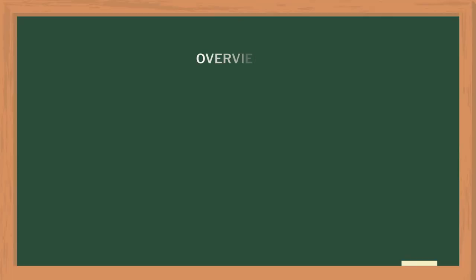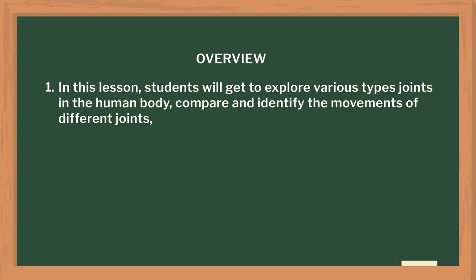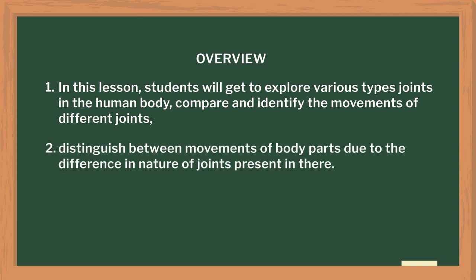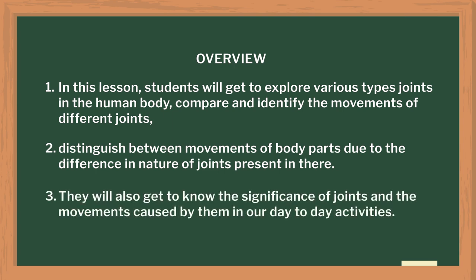Usually, this topic is introduced to students of standards 6th and 7th. I found that teaching this topic with the use of dynamic models is much more effective as the movements can be seen very clearly. In this lesson, students will get to explore various types of joints in the human body, compare and identify the movements of different joints, distinguish between movements of body parts due to the difference in nature of joints, and most importantly, they will also get to know the significance of joints and the movements caused by them in our day-to-day activities.